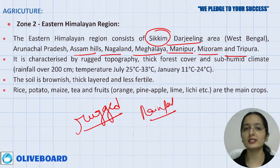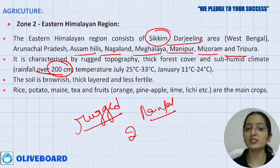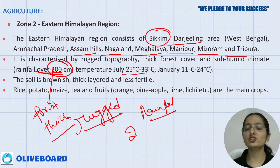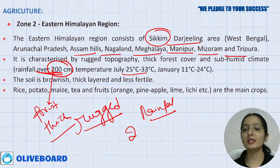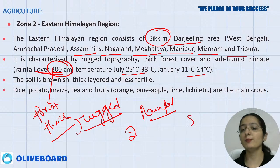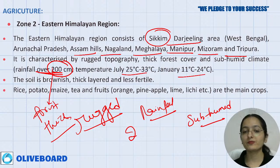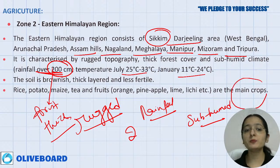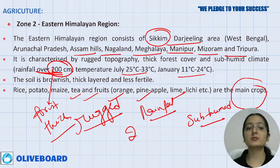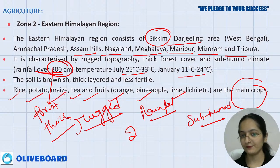Zone 2 rainfall is over 200 cm. Temperature in July: 25°C to 33°C; in January: 11°C to 24°C — climate is sub-humid. Soil is less fertile, thick, and brownish. Main crops: tea, fruits like orange, pineapple, lychee, and field crops like rice, potato, maize.